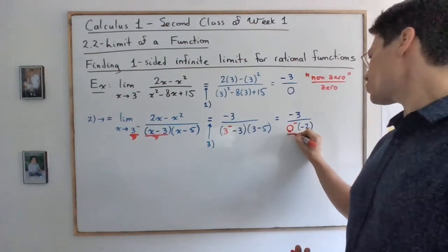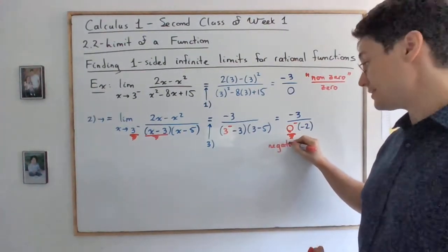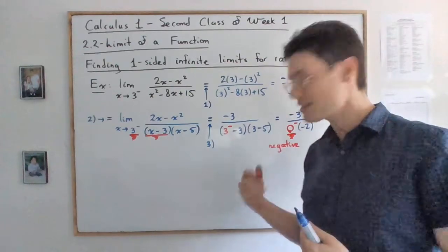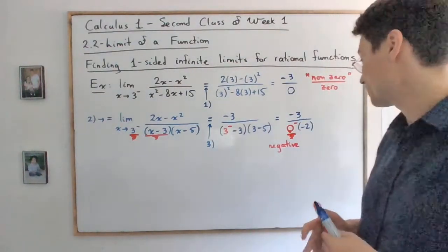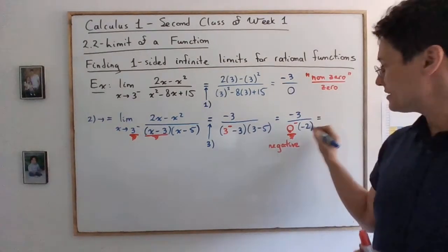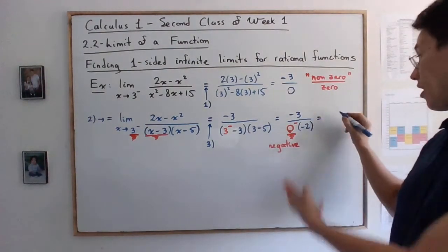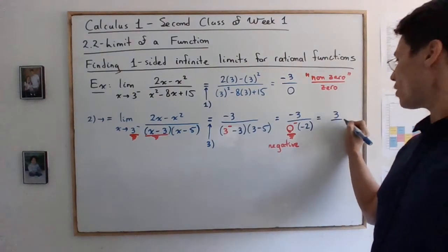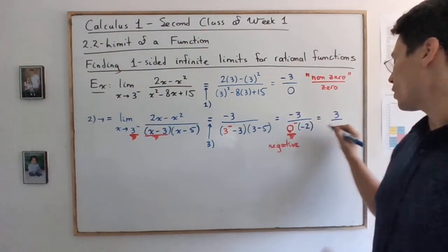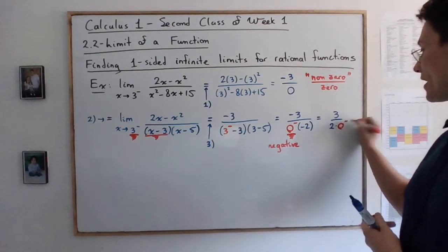As we subtract three from it, we're going to get a negative number that is approaching zero. So the way you should write this is zero from below. So what you need to remember is that this is a negative. It's a negative number. It's a number that's approaching zero, but from the negative side. Now, the only thing that's left to do is to simplify the signs of all the rest. So you'll have three over two times zero negative.